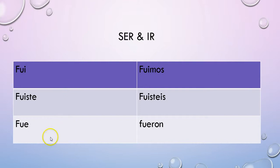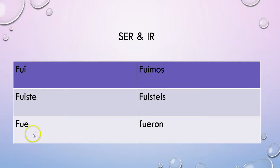HACER changes to IS and then I add my appropriate ending. For SER and IR, here are the conjugations. You'll notice in the yo form it is FUI, and down here the el/ella form is FUE — there is no accent. So in the yo form and in the él and ella forms is where you see the differences.